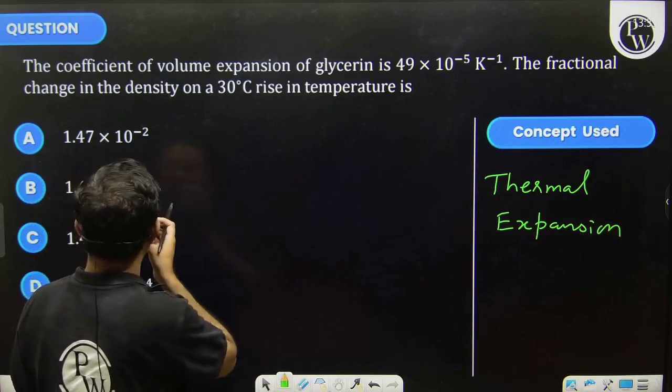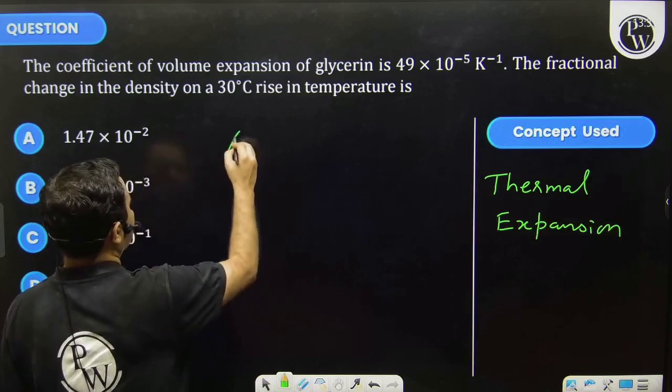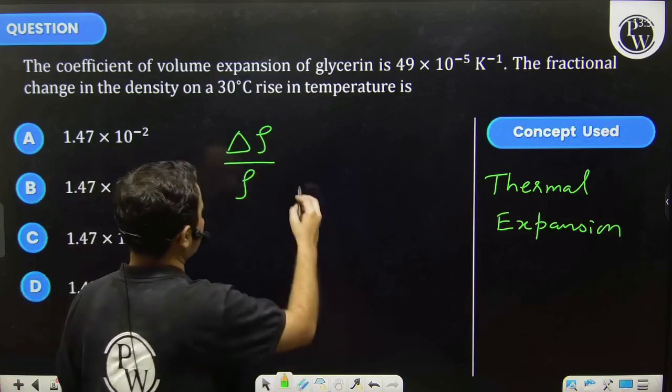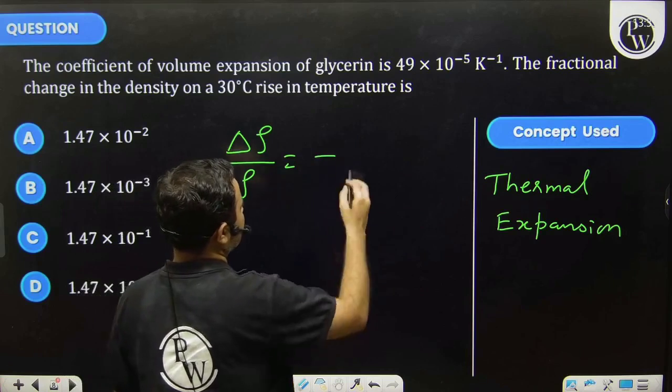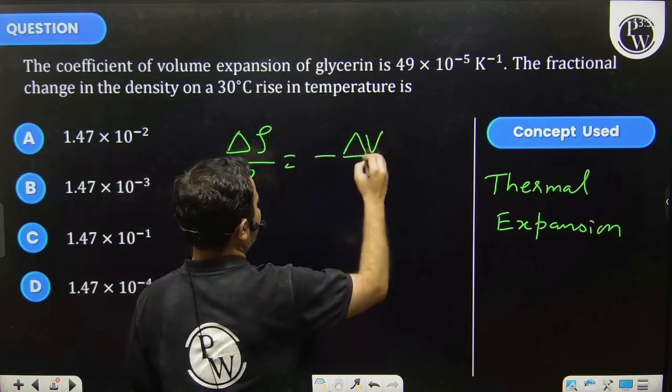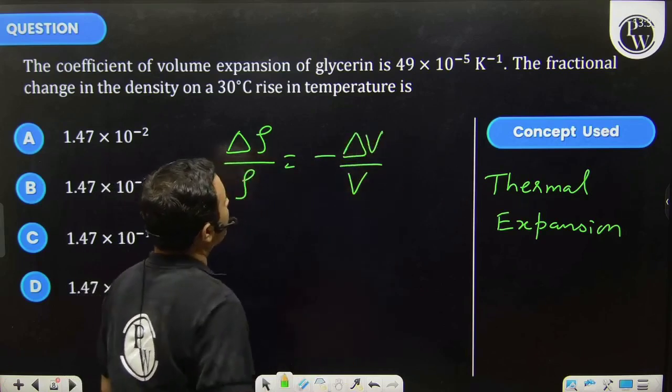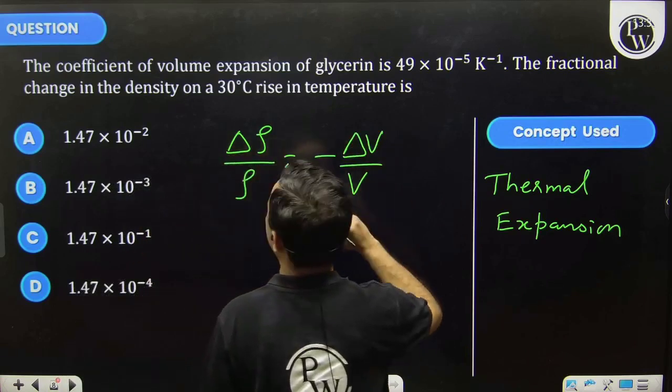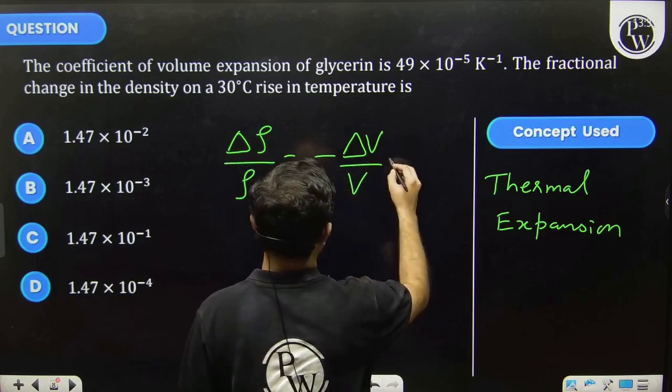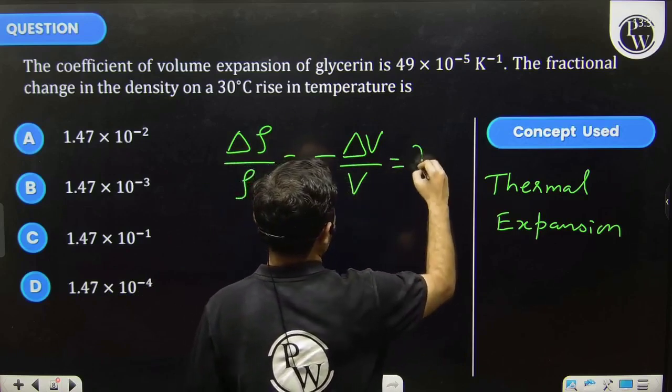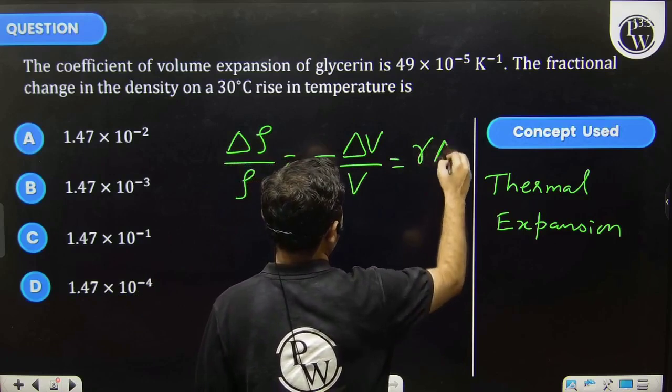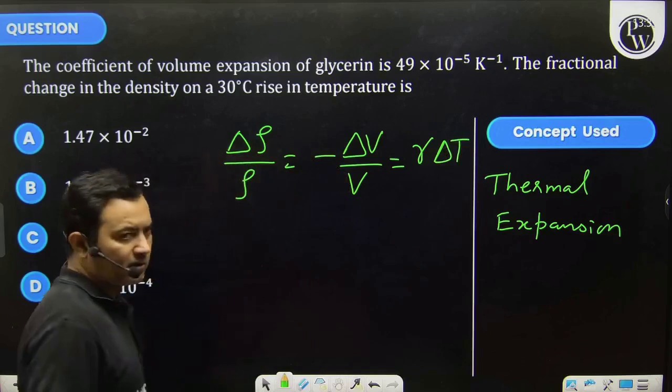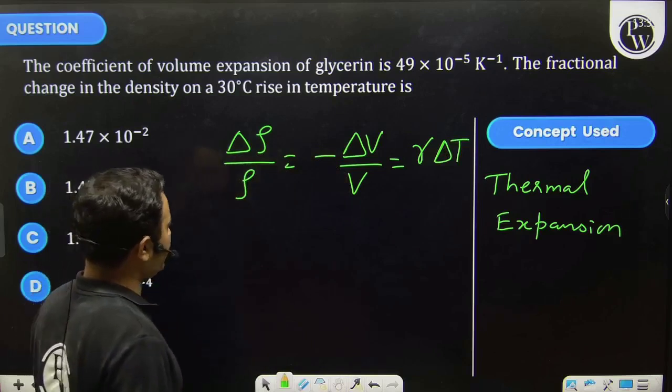Now we know that fractional change in density, delta rho by rho, equals minus delta V by V, and that will be equal to gamma delta T from the theory of thermal expansion.